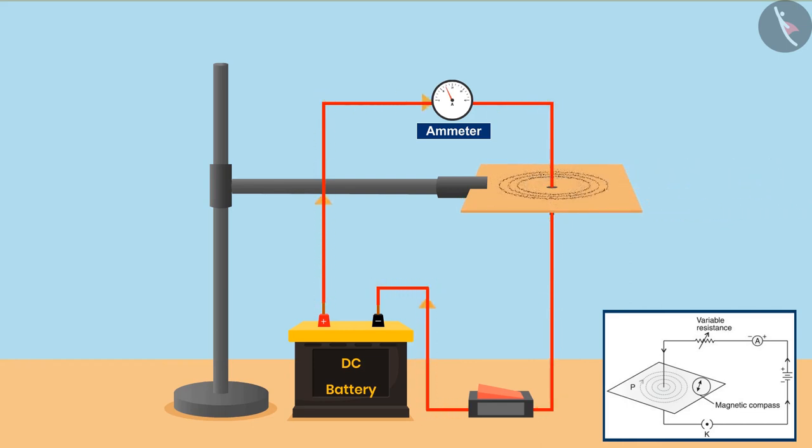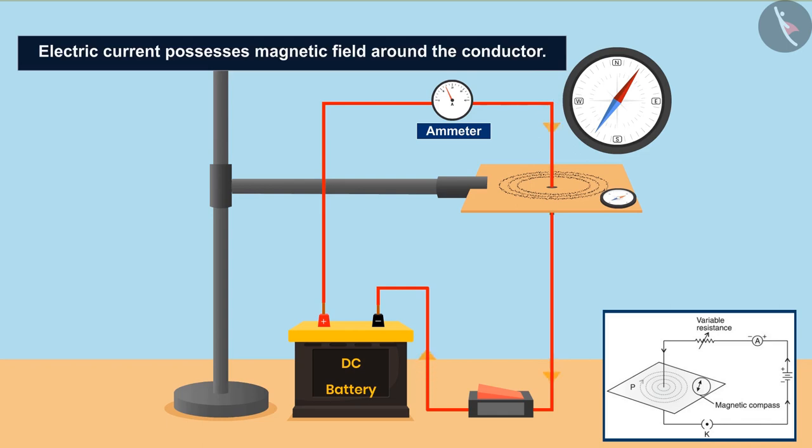This pattern is nothing else but the magnetic field lines. To find the direction of these lines, a compass can be put on the cardboard. The deflected needle will show the direction of field lines. Hence it is proved that electric current possesses magnetic fields around the conductor.